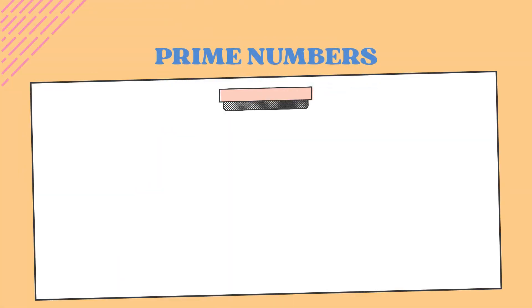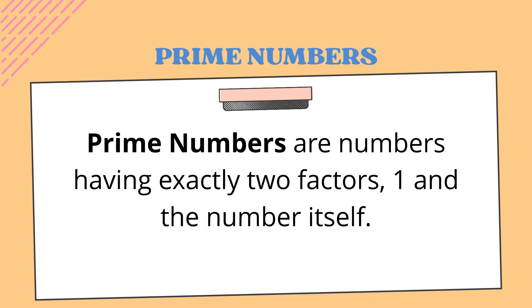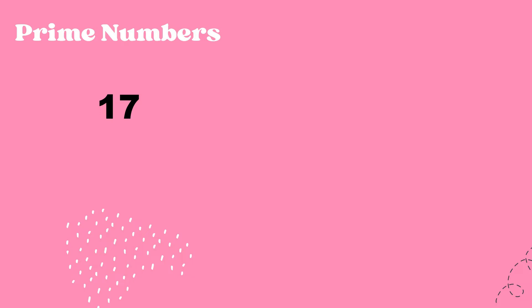Next, we're going to study about prime numbers. What are prime numbers? Prime numbers are numbers having exactly two factors: one and the number itself. For example, 17 — what are the factors of 17? The factors of 17 are 1 and 17. Seventeen times one is equal to 17.